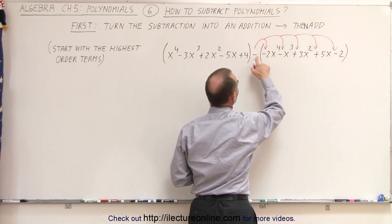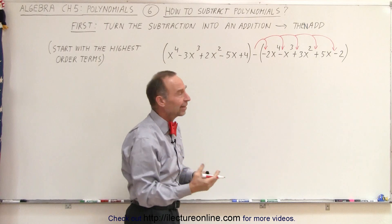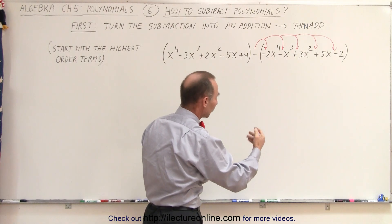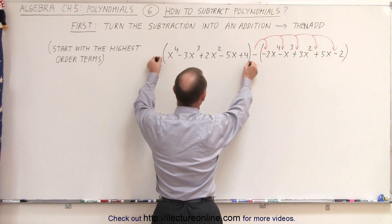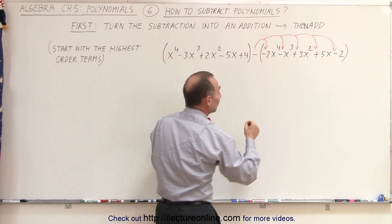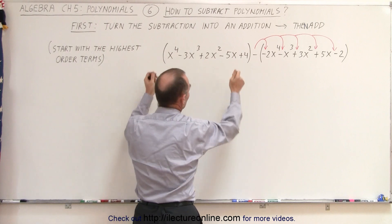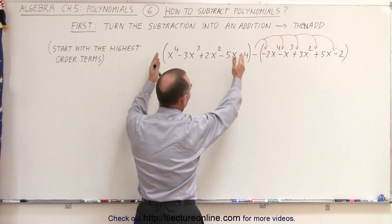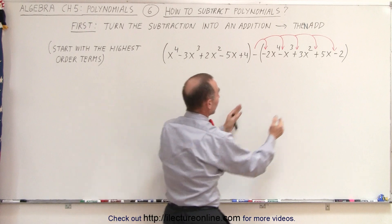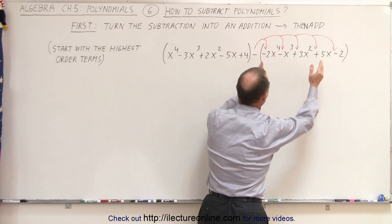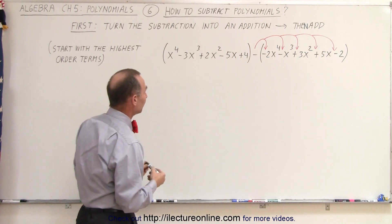In other words, a negative times a negative gives us a positive, so we simply replace it then by a positive 2x to the fourth and so forth. On the first polynomial, we can simply remove the parentheses because they are not needed — there's not a negative sign in front of it. They were simply placed there to indicate that's our first polynomial, that is our second polynomial, and there we're going to subtract the second one from the first one.